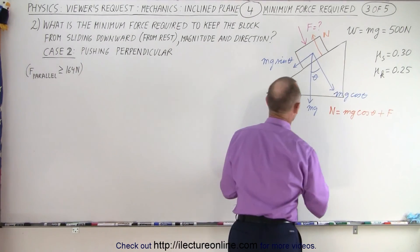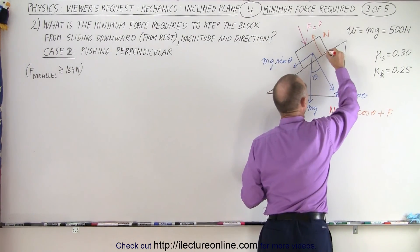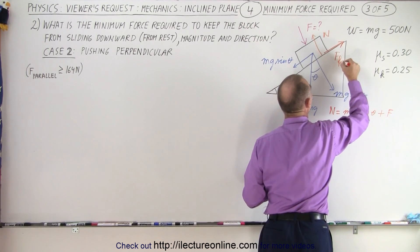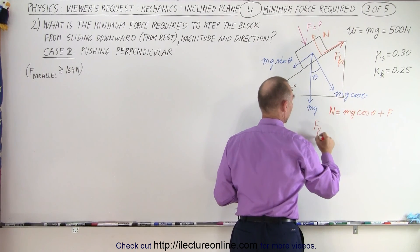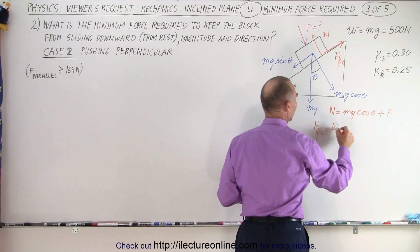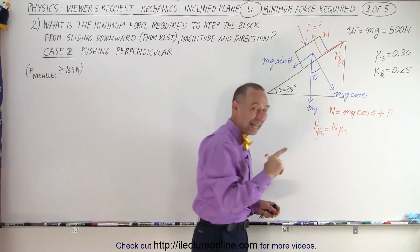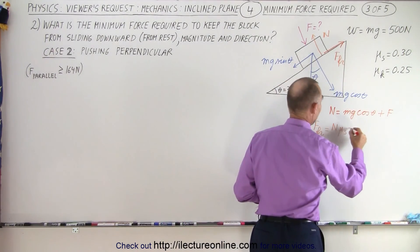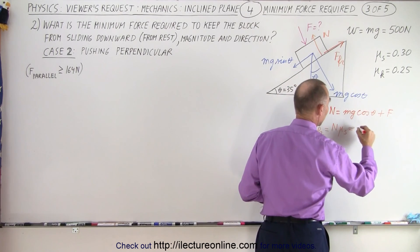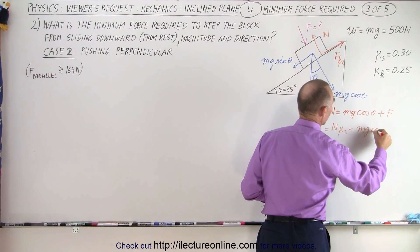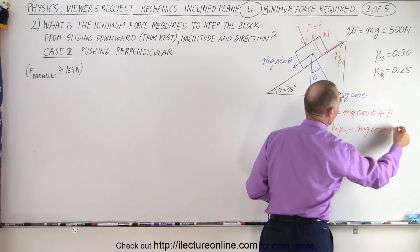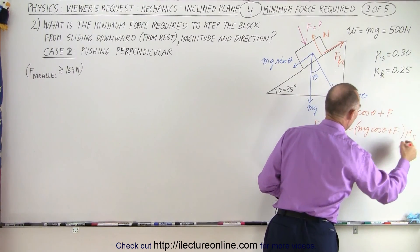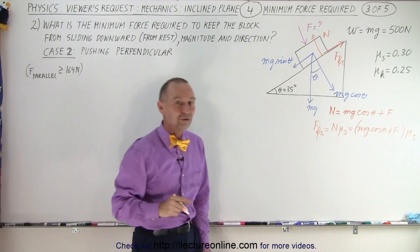And then the friction force, which will be in this direction — force friction — by definition equals the normal force times mu. In this case it is the static coefficient of friction because the block isn't moving. That means we're going to take mg cosine theta plus F and multiply it times mu sub s to give us the friction force.